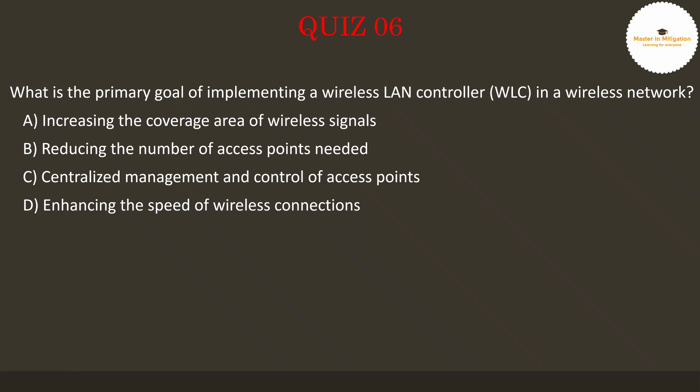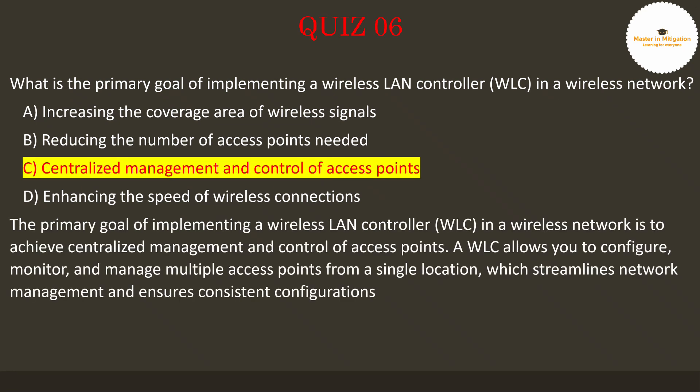The answer is C. Centralized management and control of access points. The primary goal of implementing a Wireless LAN Controller, WLC, in a wireless network is to achieve centralized management and control of access points. A WLC allows you to configure, monitor, and manage multiple access points from a single location, which streamlines network management and ensures consistent configurations.